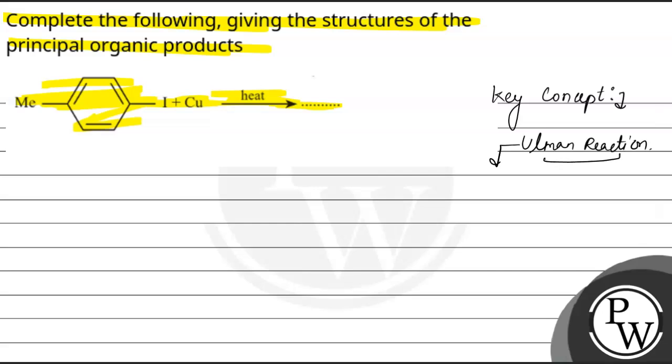What happens in Ullmann reaction? Basically, here we react two aromatic halides in the presence of copper to form the biaryls.